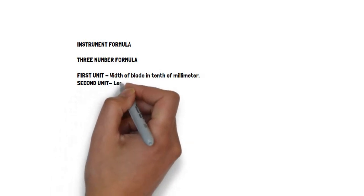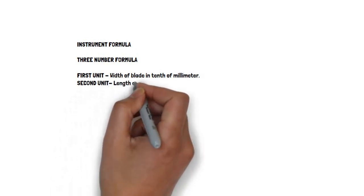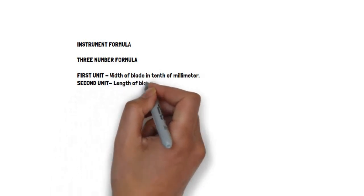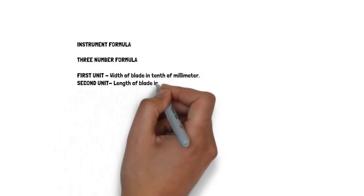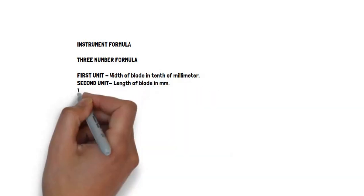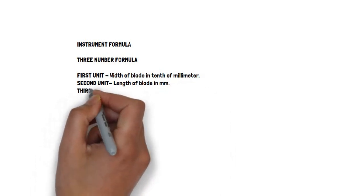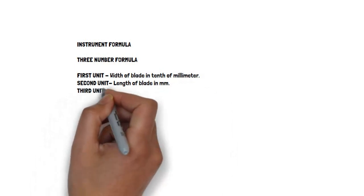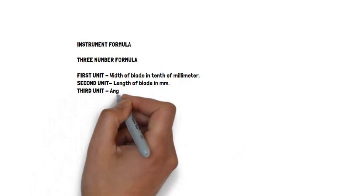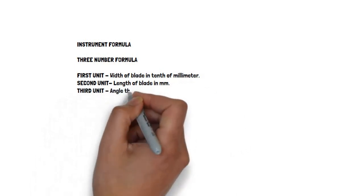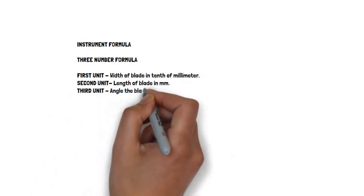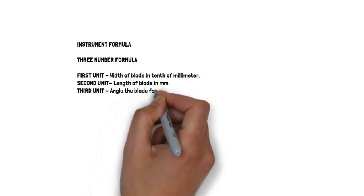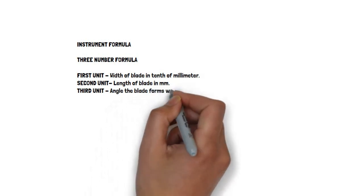3rd Unit — Length of blade in millimetre; 4th Unit — Angle the blade forms with the axis of handle in centigrad.